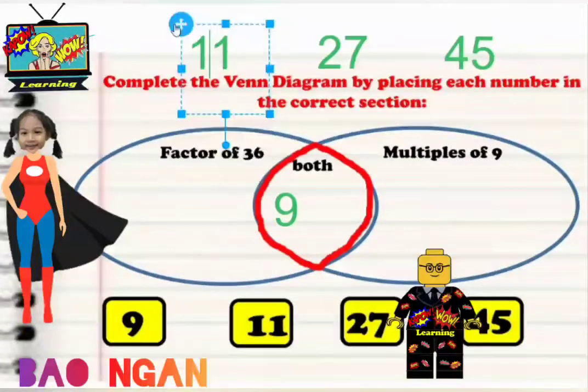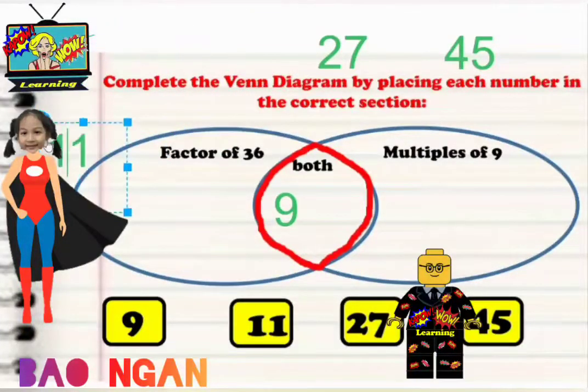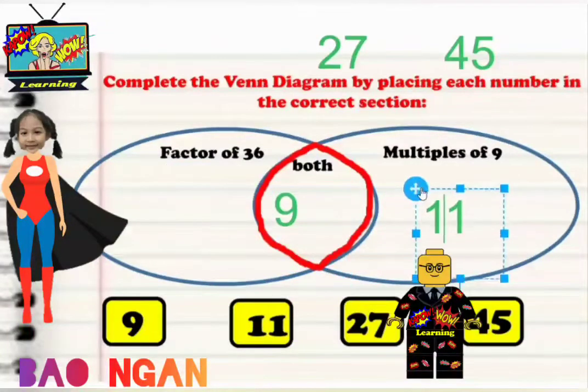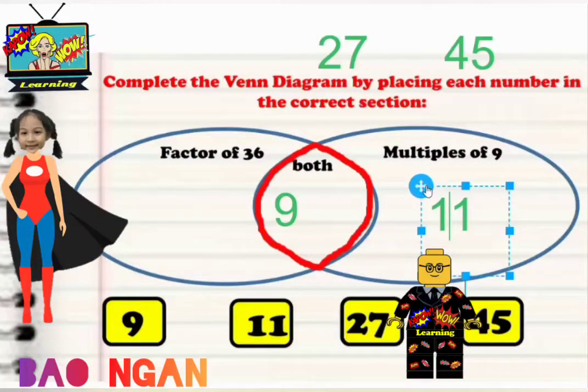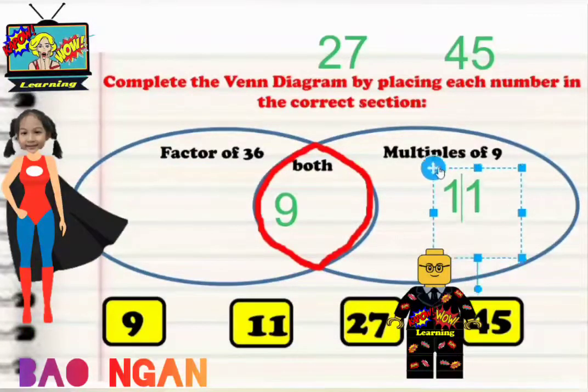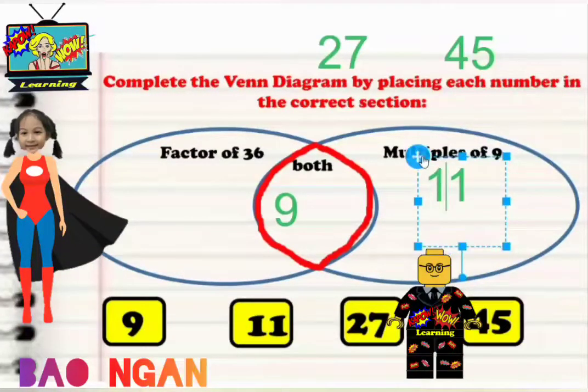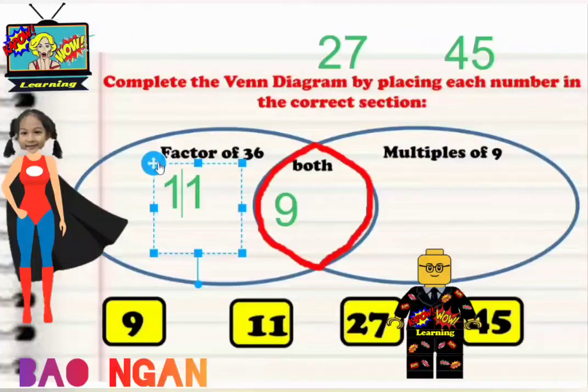Now, this is a tricky one, Bounian, so take your time. Remember, is 11 a factor of 36? It's not, is it? It's not in there. Is 11 a multiple of 9? It is not a multiple of 9. If it's not a multiple of 9 and not a factor of 36, where do we put it?